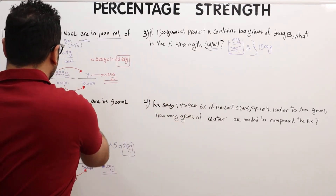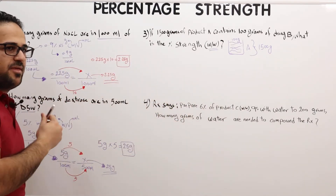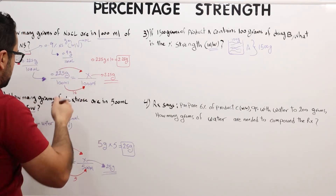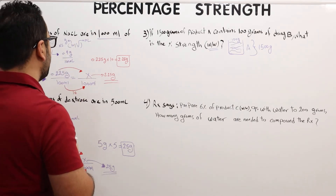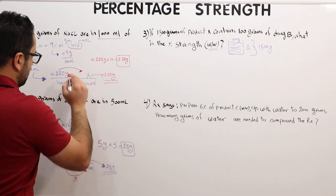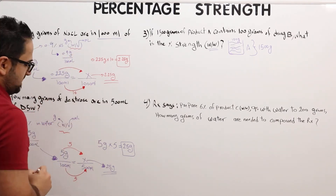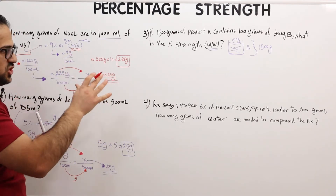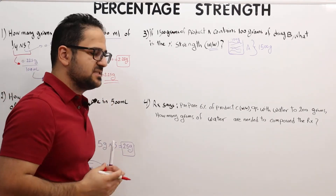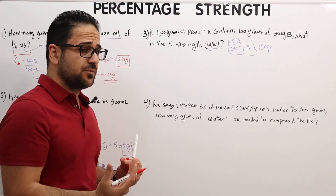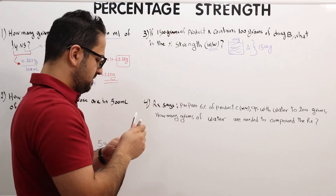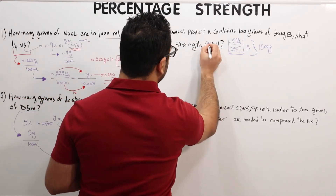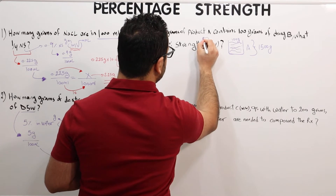Remember from the previous video: for w/w (weight in weight) questions, the denominator for percent strength is always 100 grams. For normal saline or D5W, it's weight in volume, so you need to remember those two cases separately. Otherwise, the question will usually specify the type.